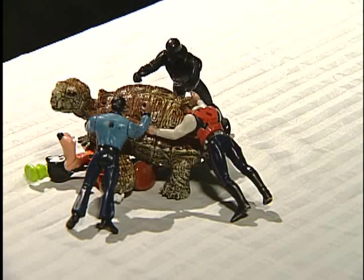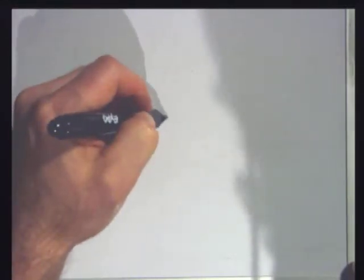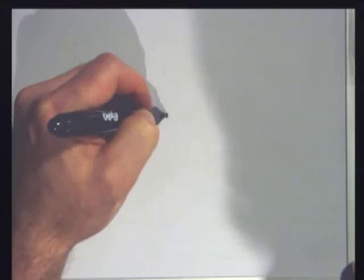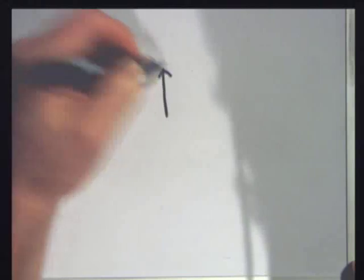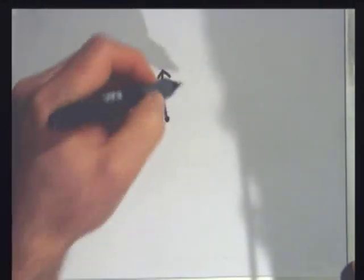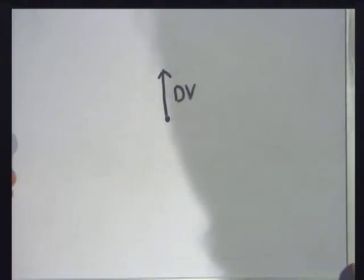First, I'll use a free body diagram. And in a free body diagram, what we do there is we have all the forces applied coming from one point. So this is Darth Vader applying a force in that direction.